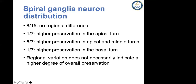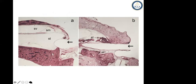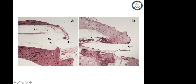In terms of the difference between round window insertion and cochleostomy, this is one example done by Bill House, and it's amazing how clean the scala tympani is. I think he was an extremely visionary and innovative surgeon who probably knew something that a lot of other surgeons didn't know even back then.